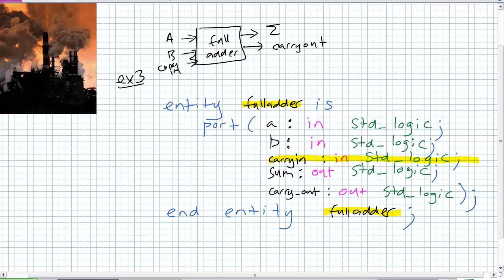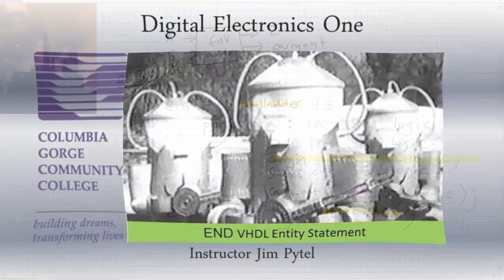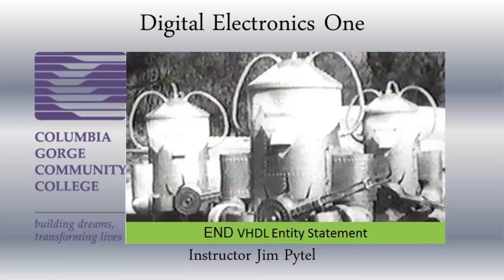Entity statement is pretty easy. You should be able to do these things. I should be able to give you a box with ins and outs. You should be able to declare the entity statement pretty easily. Let's actually go on to the architecture statement and what is the entity statement versus the architecture statement. The entity statement is name of the box, the inputs and outputs of the box. The architecture statement is what do you do with those inputs to come up with the outputs. We're going to do some very basic architecture statements in the next lecture.